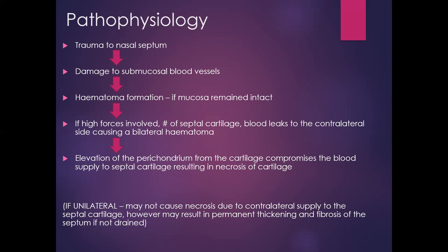In terms of pathophysiology of a septal haematoma: most frequently it occurs following trauma to the nasal septum, damaging the underlying submucosal blood vessels and leading to haematoma formation between the septum and the overlying mucoperichondrium. This assumes the mucosa remains intact, allowing the haematoma to form underneath. If the mucosa were breached, the blood would leak out and you would just have an epistaxis. If high forces are involved, you can get fractures of the septal cartilage, leading to blood leaking across to the contralateral side, causing a bilateral haematoma. Bilateral haematoma is actually more common than unilateral, though unilateral can still occur.